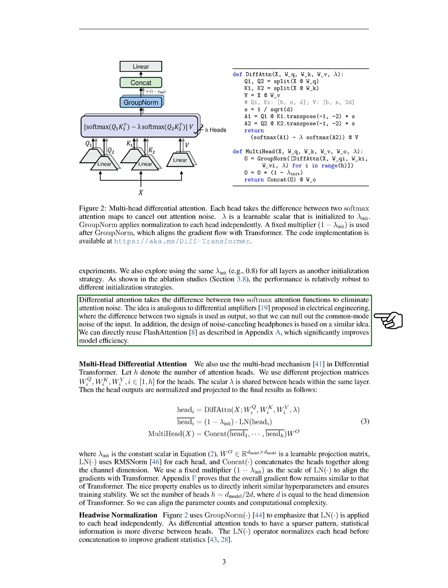Section Multi-Head Differential Attention. In this section, we discuss the multi-head differential attention mechanism used in our differential transformer. We denote the number of attention heads as H and utilize different projection matrices for each head. A shared scalar, lambda, is used within the same layer across heads. The outputs from each head are normalized and combined into the final results. We use a constant scalar for normalization to ensure gradient alignment with the transformer architecture, which helps maintain training stability. We set the number of heads to be half the model dimension, allowing us to balance parameter counts and computational complexity. For head-wise normalization, we apply a technique that emphasizes independent normalization for each head, recognizing that attention patterns can vary significantly. This normalization improves the statistical properties of the gradients.